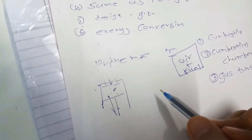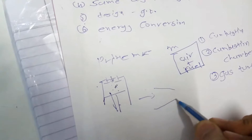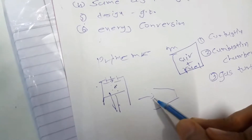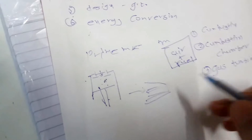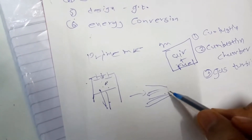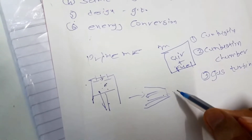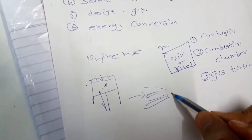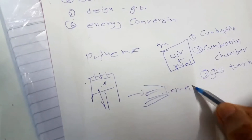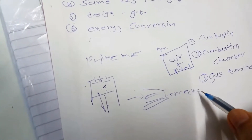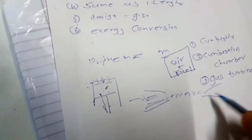Similarly in a gas turbine, first fuel comes in. There are some blades here. When the fuel gets heated at high pressure and temperature it gets expanded, and we get our mechanical energy. After that, the exhaust gets removed from here.